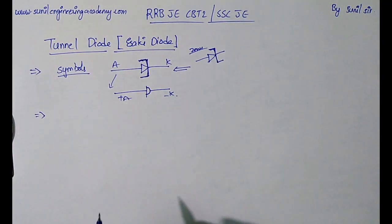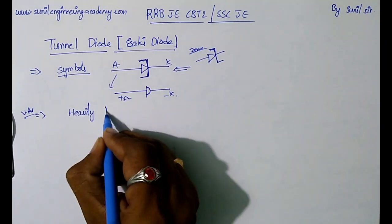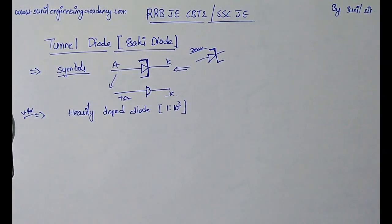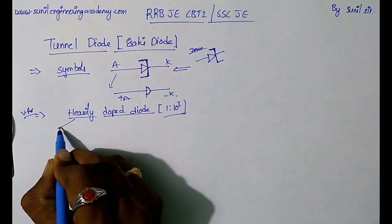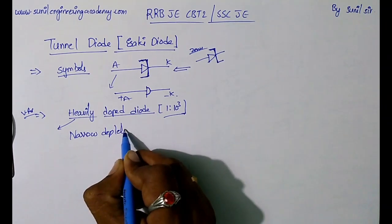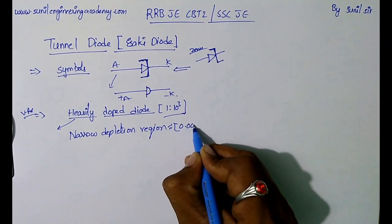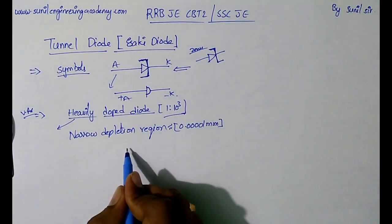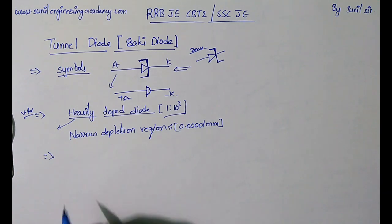A very important point: the tunnel diode is a heavily doped diode. The concentration of impurities is 1 to 10³. Because it is heavily doped, the depletion layer is very narrow — the depletion region is nearly about 0.000001 mm.